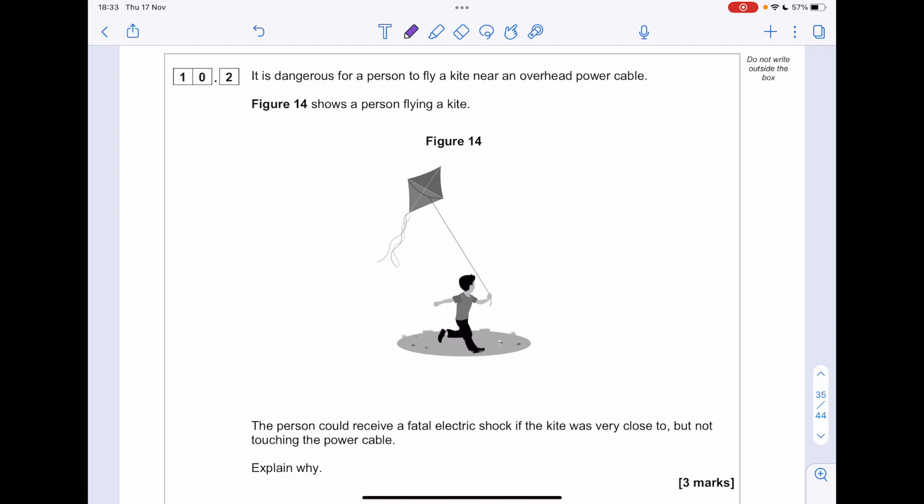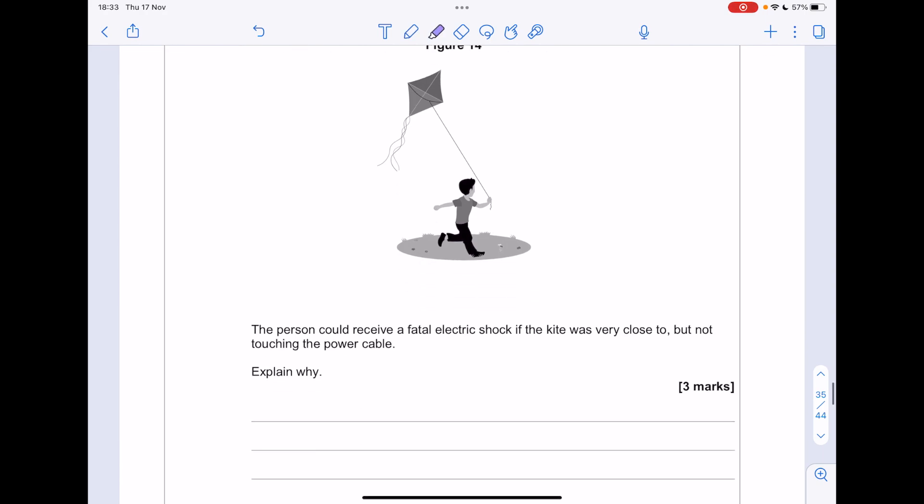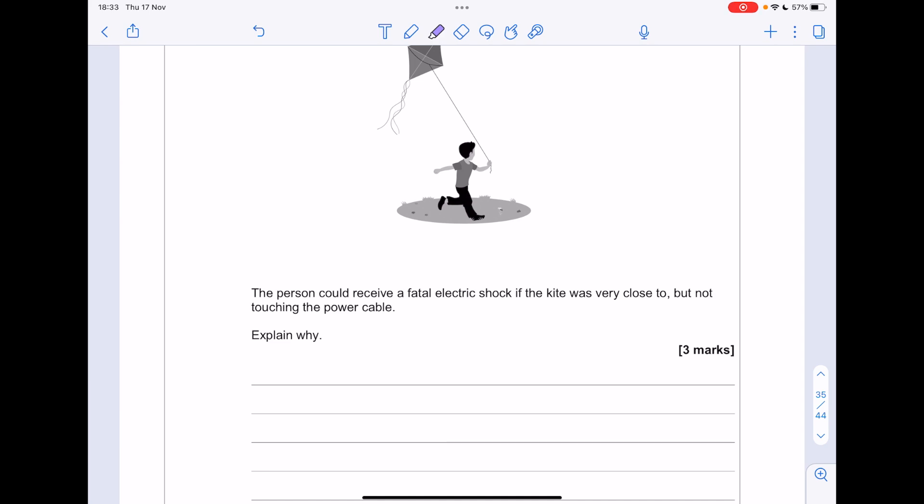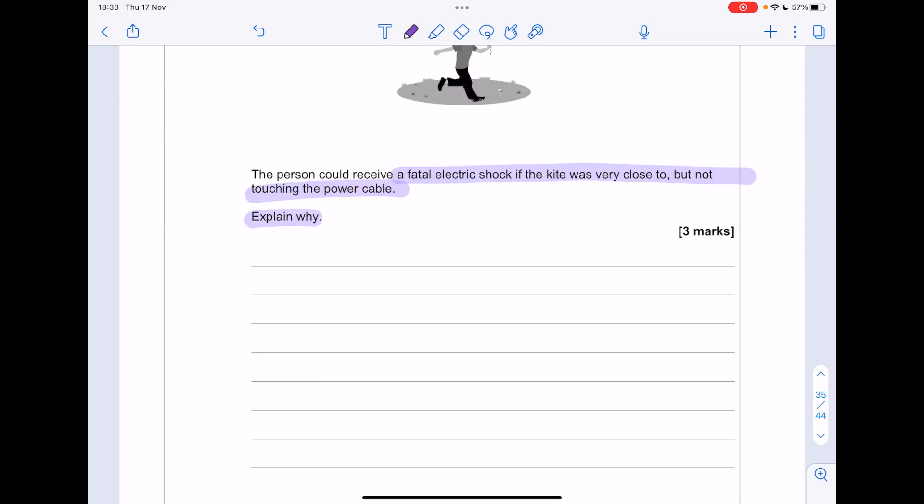It is dangerous for a person to fly a kite near an overhead power cable. Figure 14 shows the person flying a kite. The person could receive a fatal shock if the kite was very close to, but not touching the power cable. Why? Because the electric field strength is very high in the cables, it means that the air can become a conductor of that charge. And therefore, that string conducts the charge to the person.